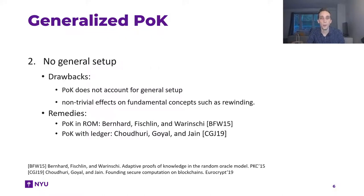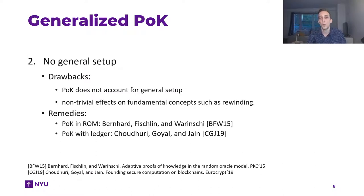Indeed, in prior work, Bernard et al. considered proof of knowledge in the random oracle model. And in more recent work, Sudri et al. considered proof of knowledge in the blockchain setting, where all parties are assumed to have access to a public blockchain ledger. In particular, they assumed that the extractor cannot rewind this public ledger, which obviously leads to many non-trivial effects not reflected in the standard proof of knowledge, where the extractor is always assumed to be able to rewind the entire world.